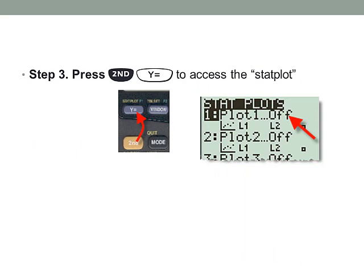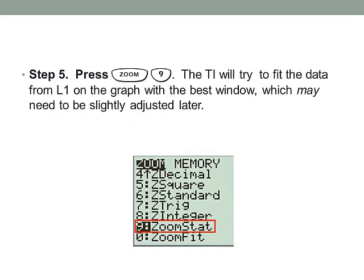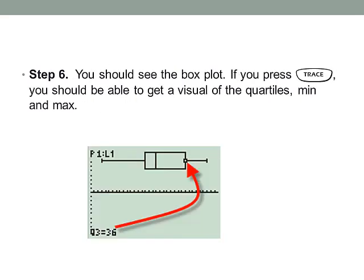Next, press 2nd, Y equals, to access the stat plot, and make sure it's on. You're going to turn it on, and then make sure you select the right type. We're going to select the box plot. You can either select this one, or it may be better to select this guy here. This one will actually show us the outliers. So select this guy right here with the outliers. You see those visually right there, those two little dots. Then press Zoom 9, and it'll try to fit the data, and it does usually a pretty good job with the box plot.